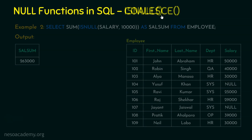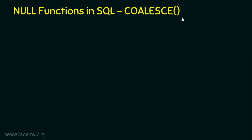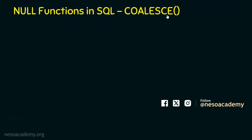Let's move on to the next null function, which is COALESCE. In English, coalesce means to come together to form one larger group. However, in DBMS, COALESCE returns the first occurring non-null expression. This function can take multiple expressions — expression 1, expression 2, expression 3, and so on — and it returns the first occurring non-null expression among the set of arguments passed.